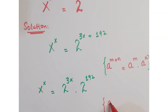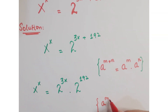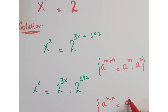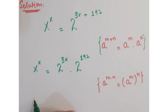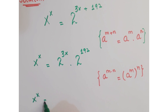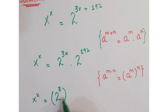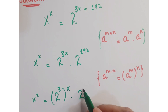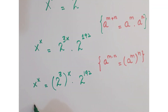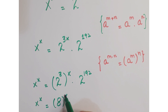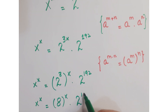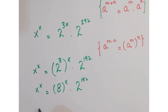Now, as you know that a to the power m into n can be written as a to the power m whole to the power n. So we can write this as x to the power x is equal to 2 to the power 3 whole to the power x into 2 to the power 192, which gives us 8 whole to the power x into 2 to the power 192.